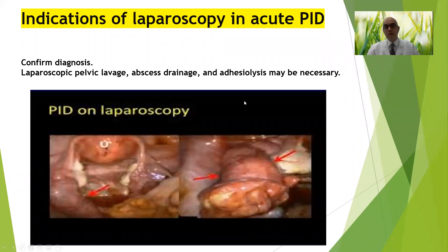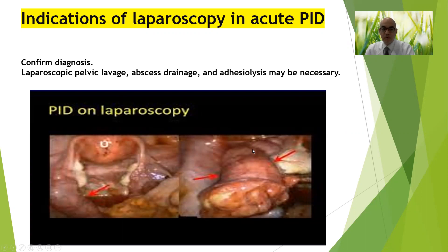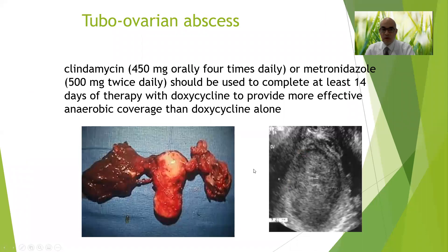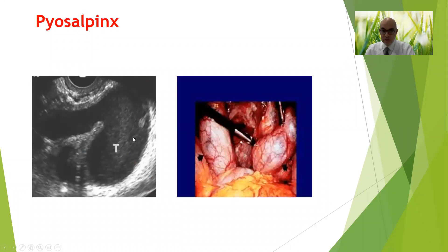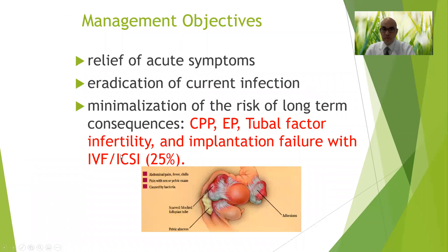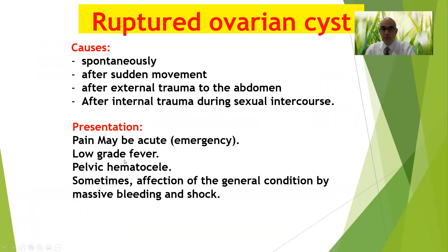Indications for laparoscopy in PID: not all cases require it — mainly after failure of antibiotics, some cases of tubo-ovarian masses or abscess, or perforation of the abscess with peritonitis. Laparoscopy allows peritoneal toilet, drainage of abscess, and adhesiolysis.